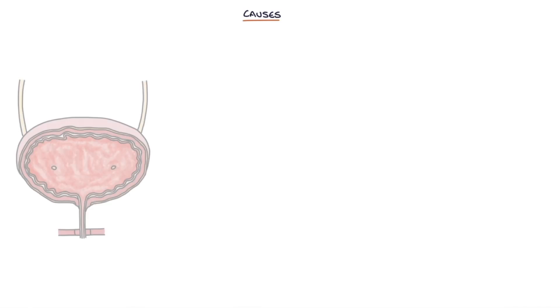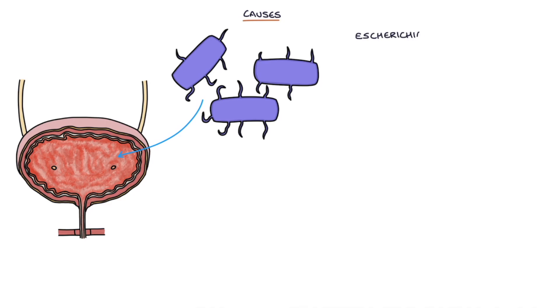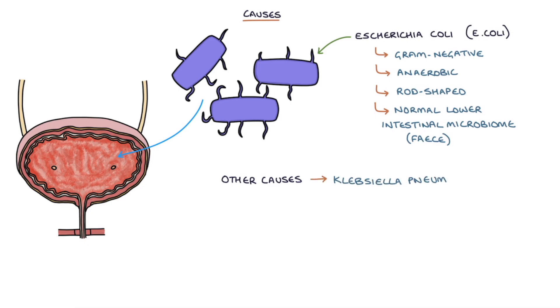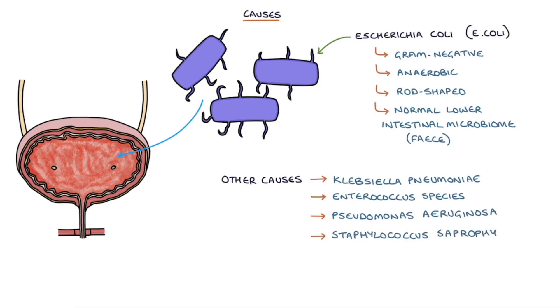The most common cause of a UTI is Escherichia coli. E. coli are gram-negative, anaerobic, rod-shaped bacteria that are part of the normal lower intestinal microbiome. They're commonly found in feces and can easily spread to the bladder. Other causes of lower urinary tract infections are Klebsiella pneumoniae, which is a gram-negative anaerobic rod; Enterococcus species; Pseudomonas aeruginosa; Staphylococcus saprophyticus; and Candida albicans, which is a fungus.